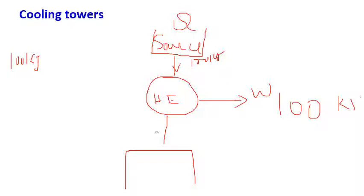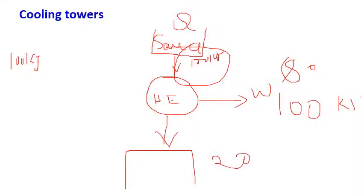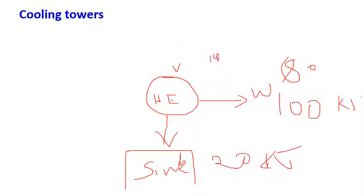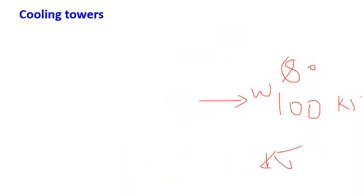There is a sink which absorbs the rejected heat. If 100 kilojoules of heat is supplied, I may get around 80 kilojoules of work — the remaining 20 kilojoules has to be dumped somewhere, and that is called the sink. Like a radiator in an IC engine, without a radiator I cannot operate an IC engine for a long duration. The same role is played by cooling towers in thermal power plants.